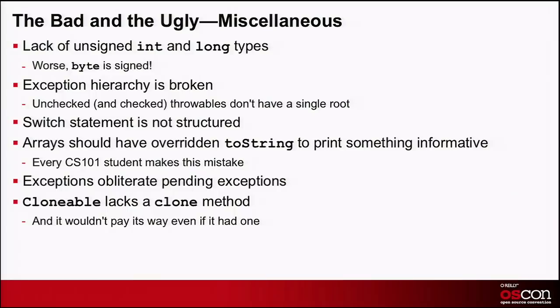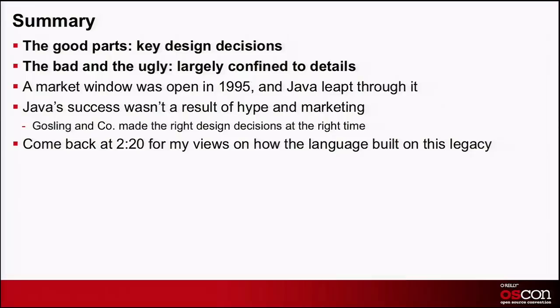In summary, the good parts are the key design decisions — the basics James and his team got right. The bad and ugly parts are largely confined to the details. A market window opened up in 1995 for a new language, and Java jumped through it. Java's success was the result of the Oak team making most of the right design decisions. Come back at 2:20 for a much longer talk discussing how we built on this legacy over the past decade and a half, and where we did it proud and where we dishonored it. Thank you very much.